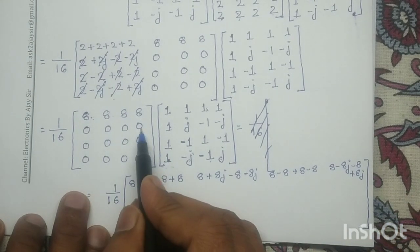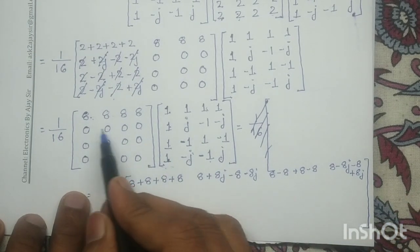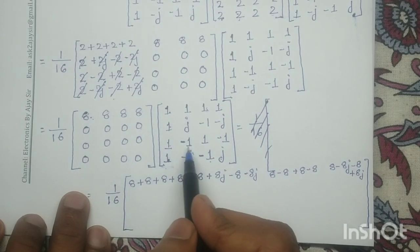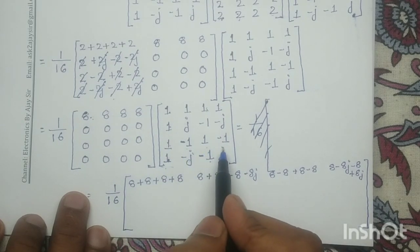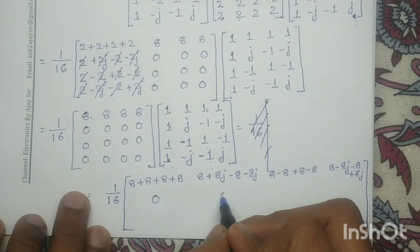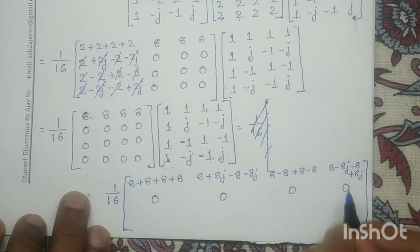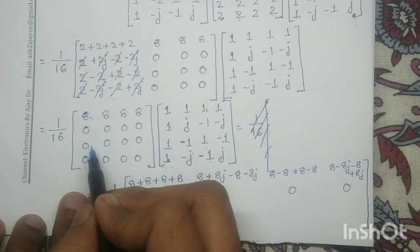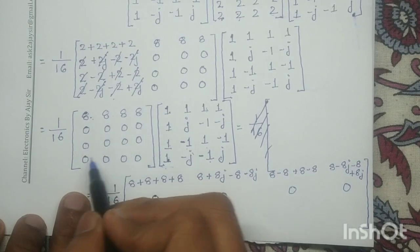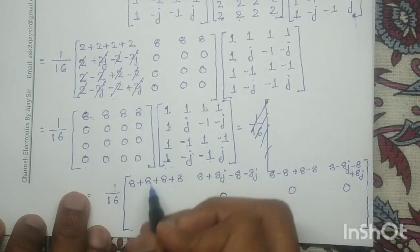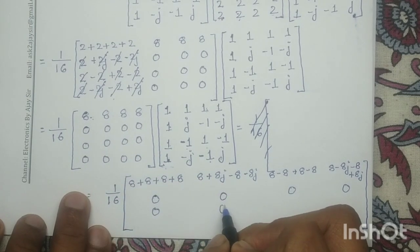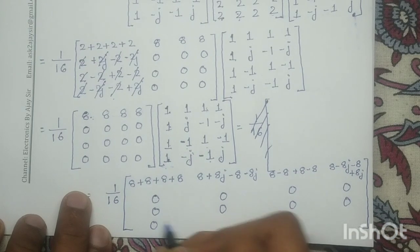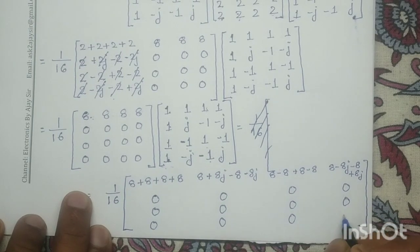Since the second, third, and fourth rows all have elements equal to 0, when these rows are multiplied with either the first, second, third, or fourth columns, the results are all 0. So the matrix after this multiplication is [32, 0, 0, 0; 0, 0, 0, 0; 0, 0, 0, 0; 0, 0, 0, 0].